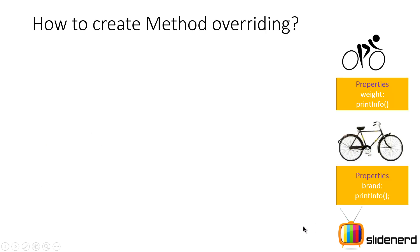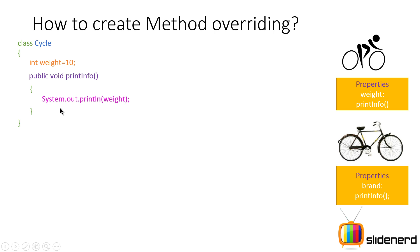Let's take a look at a simple code example to see what method overriding is. I have my class Cycle. It has weight — I'll say int weight equals 10. Forget about the constructors and everything else. There's a method public void printInfo. Inside this method, I simply print it out by saying System.out.println weight.